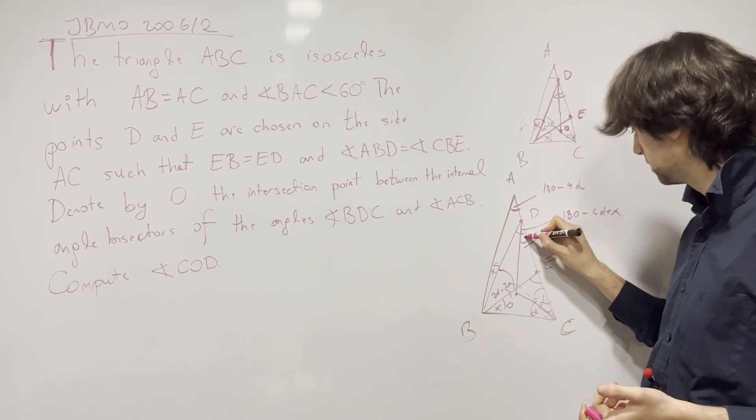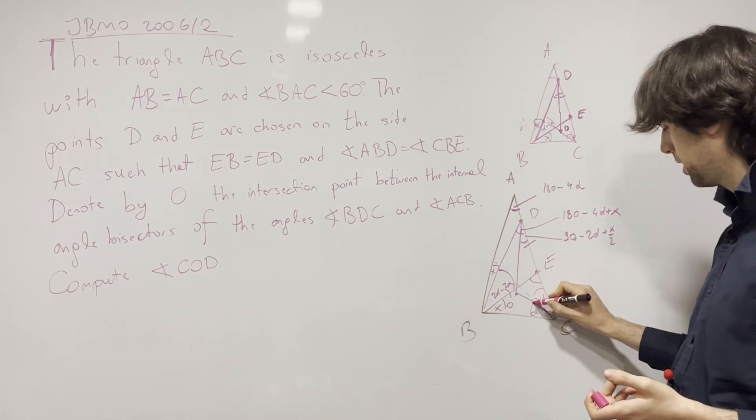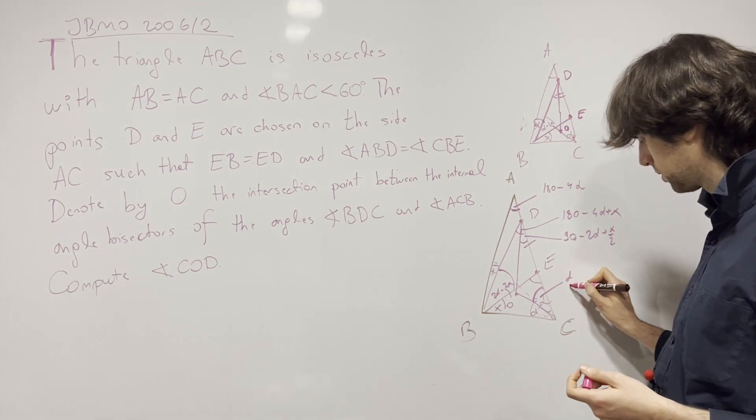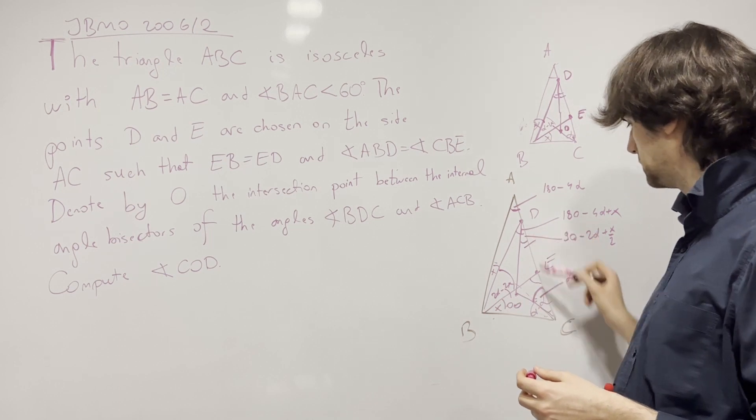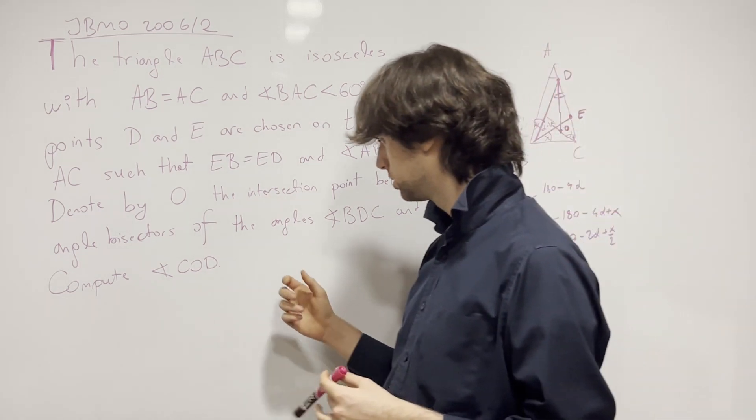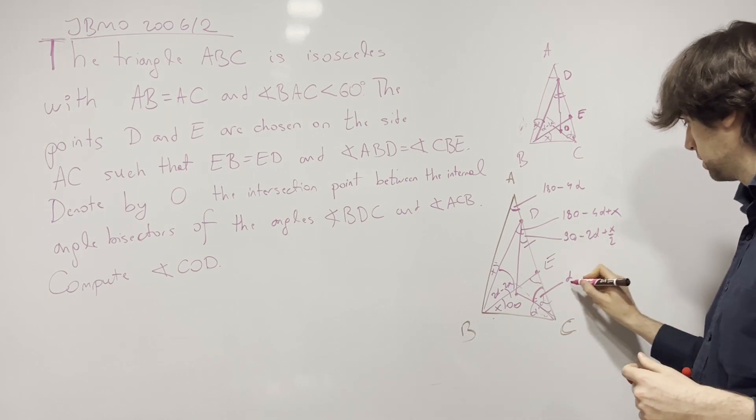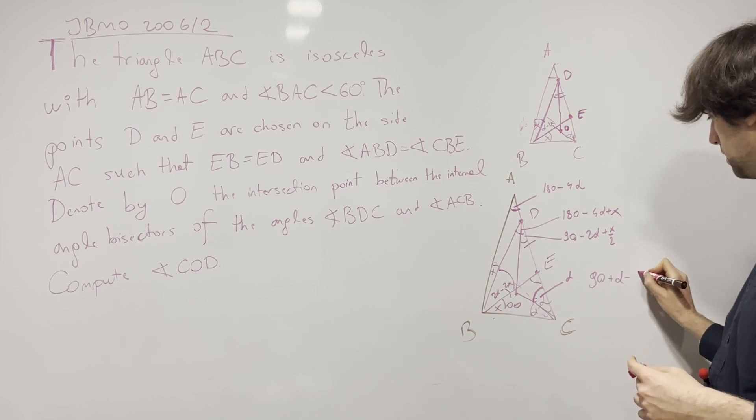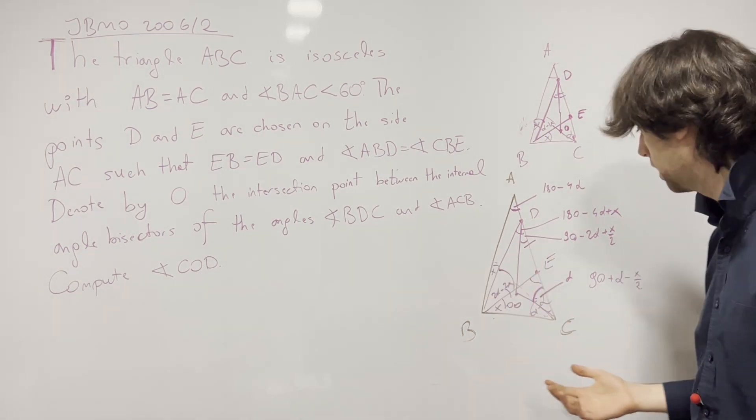And now what happens when we take these angle bisectors? They meet at point O and we will figure out what angle COD is. So this will be equal to 90 minus 2 alpha plus X over 2. And this thing right here will be equal to alpha. And we will compute COD. And it seems to be equal to 90 plus alpha minus X over 2.